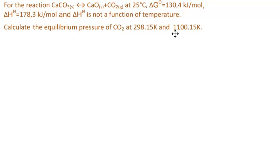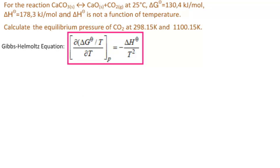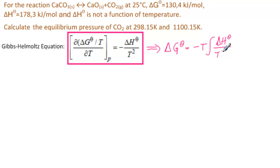For the second part, we need to calculate the equilibrium pressure of CO2 at 1100.15 K. Notice we have not yet used the ΔH° value. We will use it now in a standard way — we will find ΔG° at 1100 K by using the standard Gibbs-Helmholtz equation.